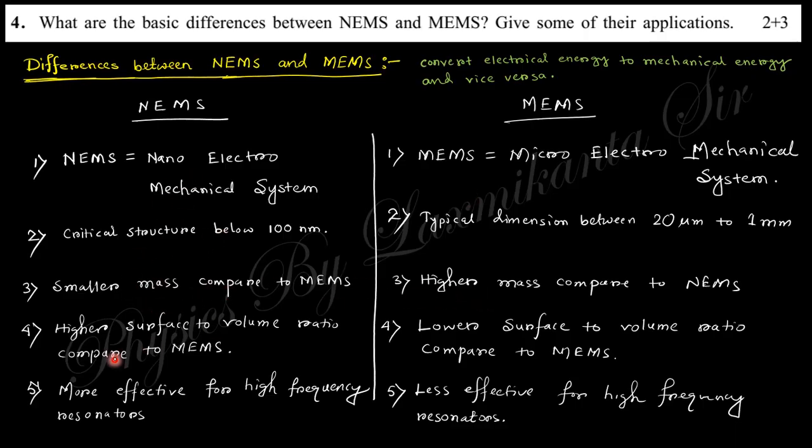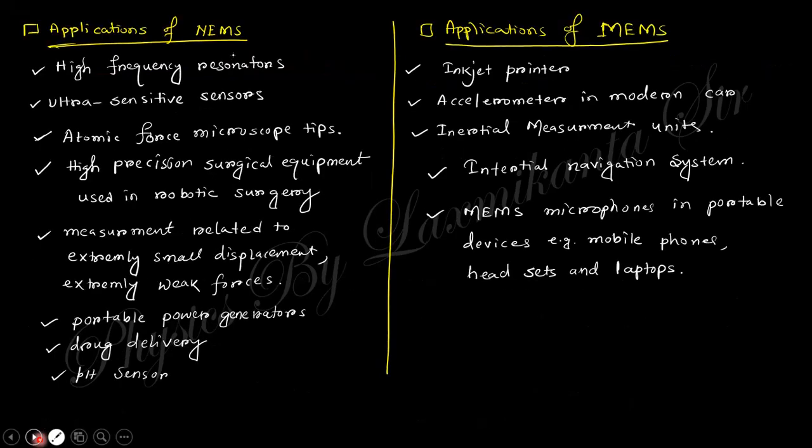NEMS has smaller mass compared to MEMS and higher surface to volume ratio, which is effective when surface phenomena is active. When surface contact is necessary, this higher surface to volume ratio is more preferred, making it more efficient for high frequency applications.